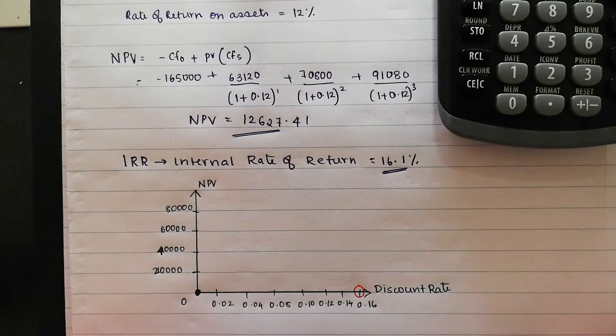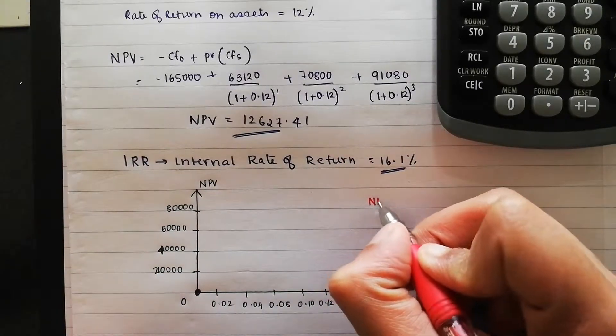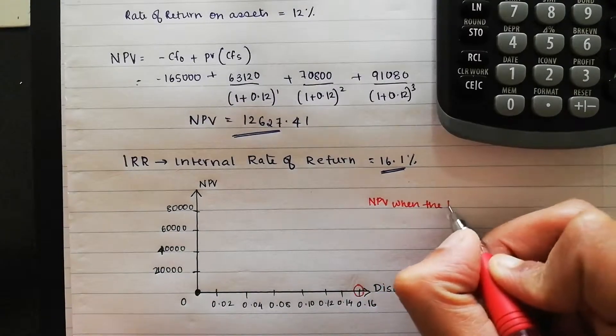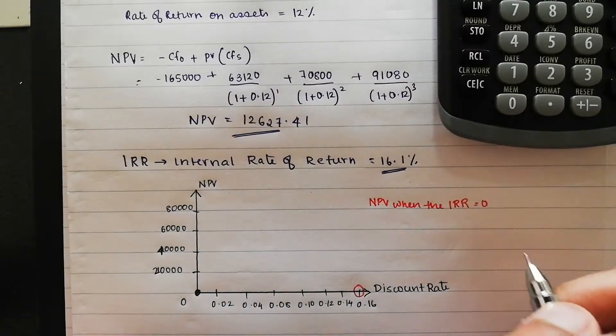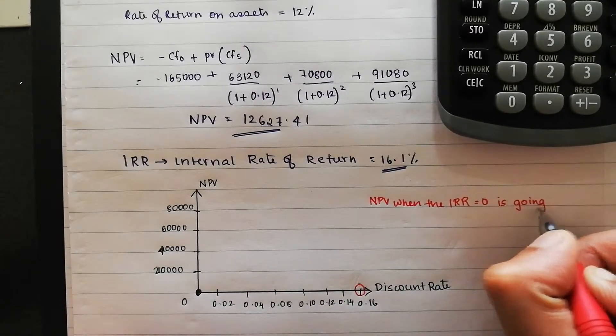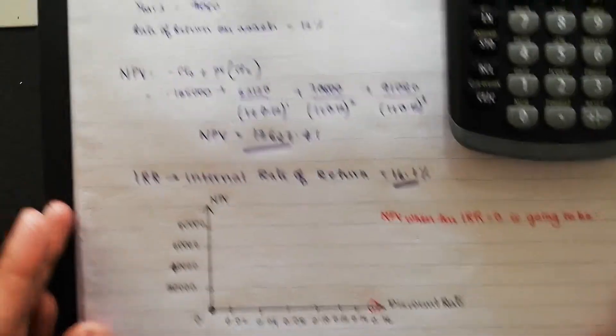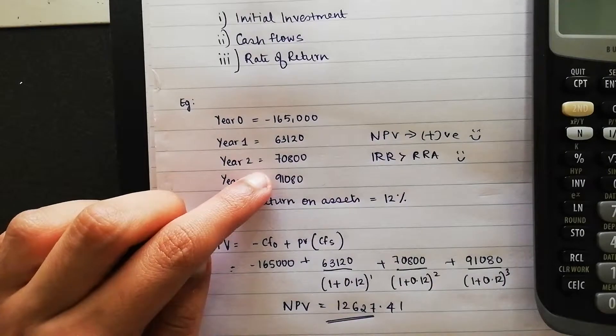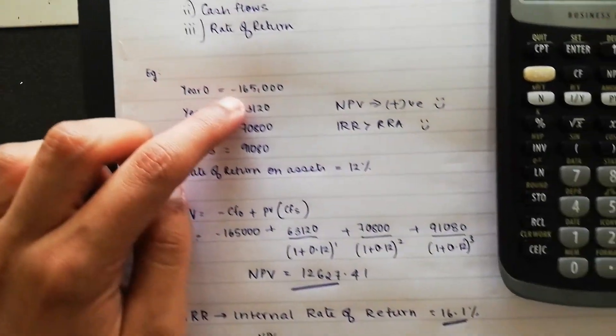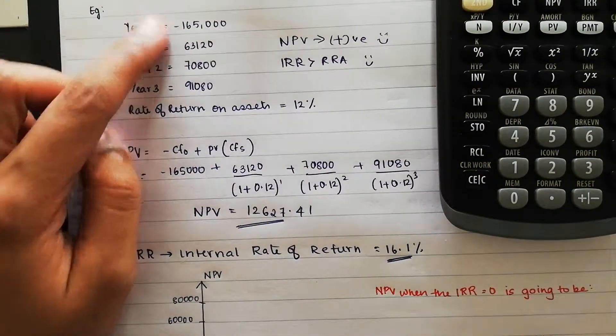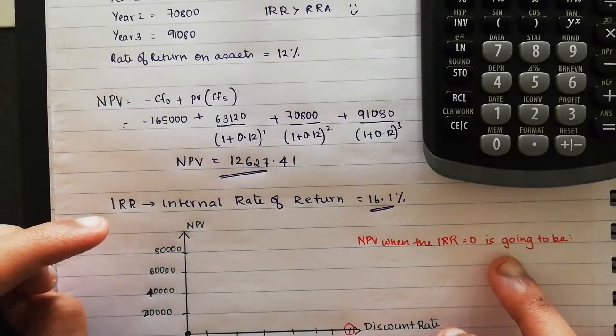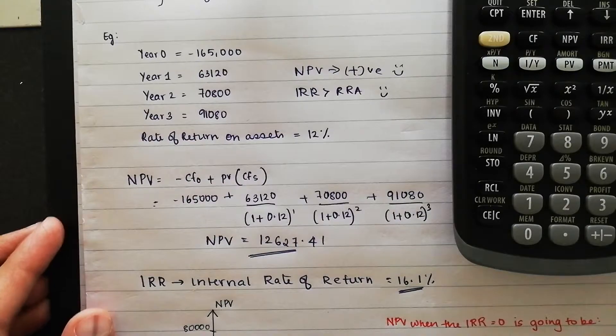Well, there's an easier method to calculate that. The NPV when the IRR is equal to 0 is going to be just all of these cash flows added together, including the year 0 with the negative sign. When we add all of those four cash flows, that is going to be our NPV when the IRR is equal to 0. And so if you're going to calculate that,